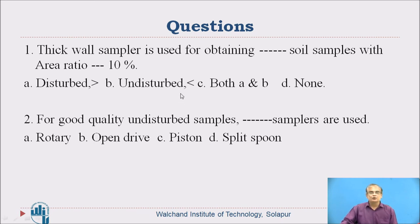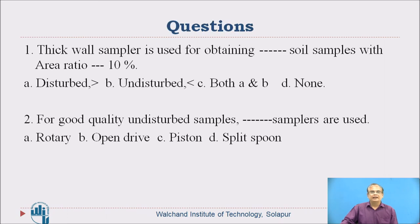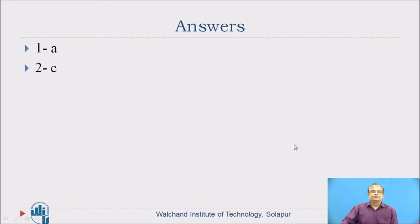Here are two questions for you. Question 1: Thick wall samplers are used for obtaining dash-dash soil samples with an area ratio dash-dash 10%. Question 2: For good quality undisturbed samples, dash-dash samplers are used. The answers: Question 1 — disturbed samples, greater than 10%. Question 2 — piston samplers are used.